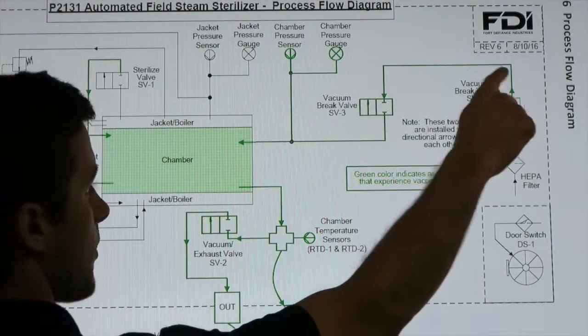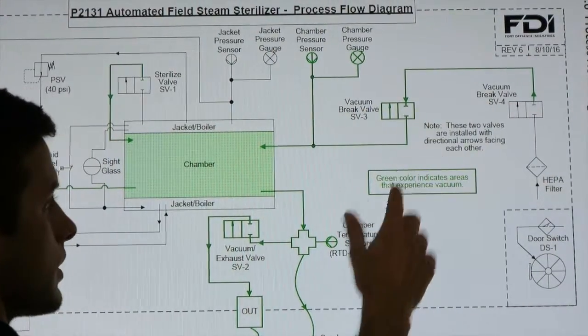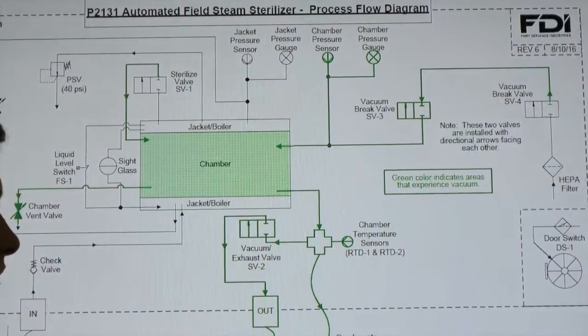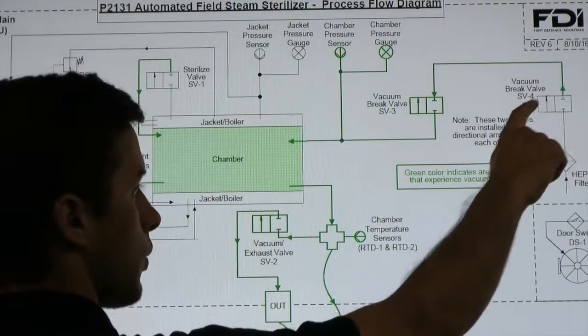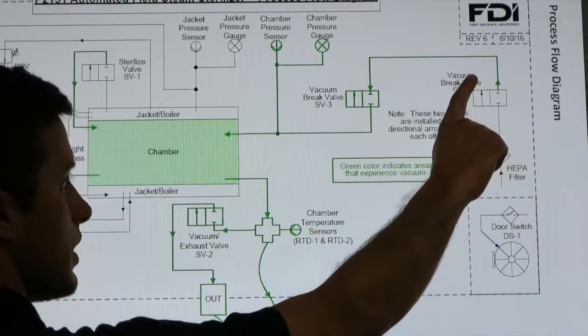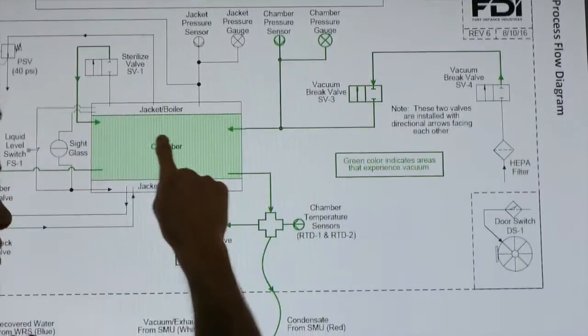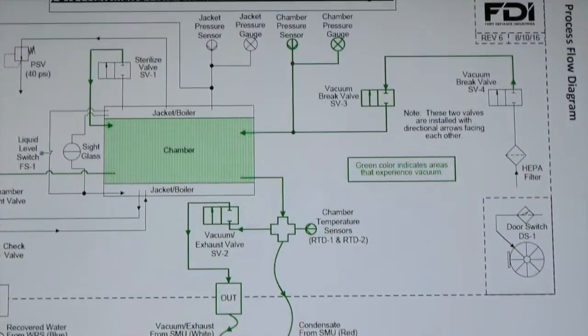Also over here I have my vacuum brake valves. So if the vacuum brake valve, the one closest to the HEPA filter is leaking, it could allow air into the chamber and I wouldn't pass vacuum leaks.